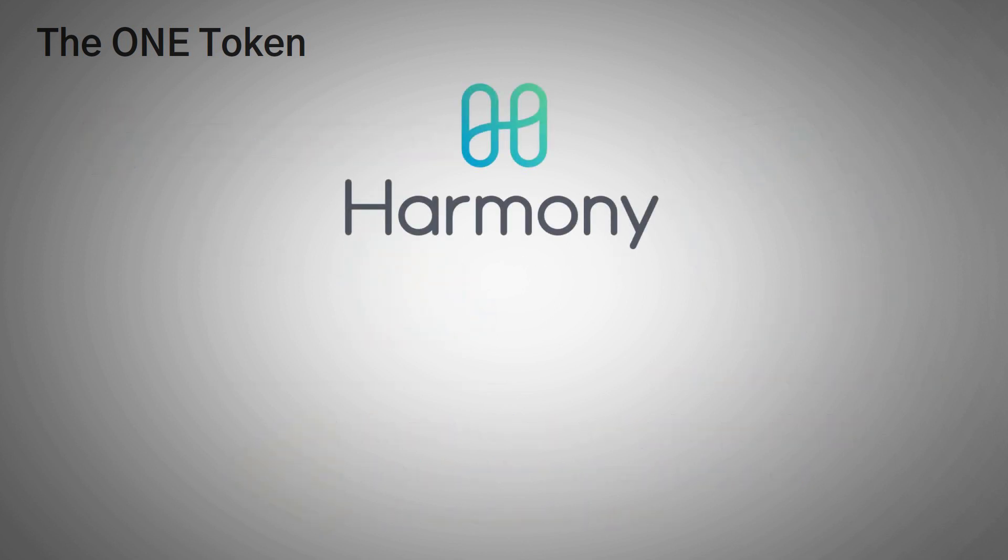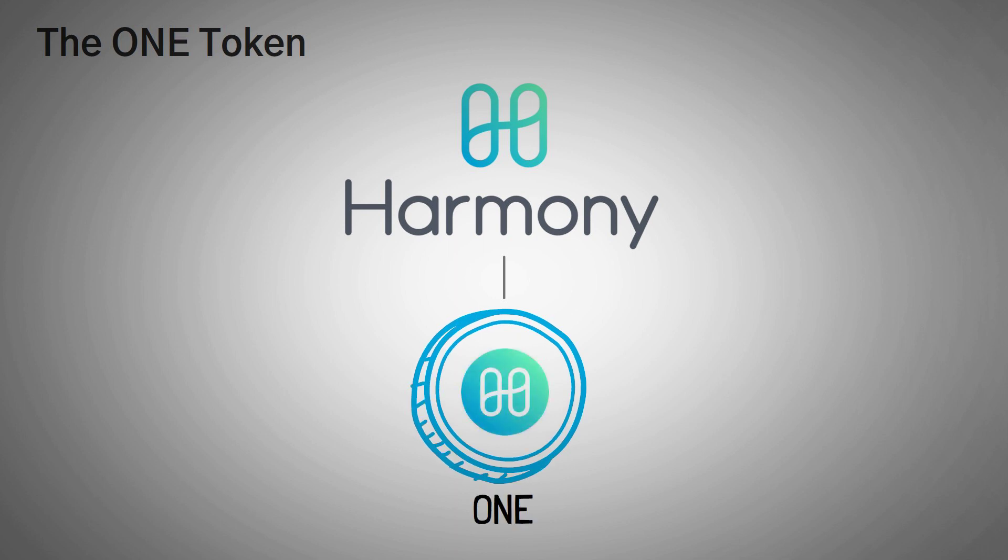So as we can expect, Harmony 1 has its own token, and as you have probably already noticed, it's called 1. The token is used for typical purposes like fees on the network and staking, even governance and voting on changes in the network.